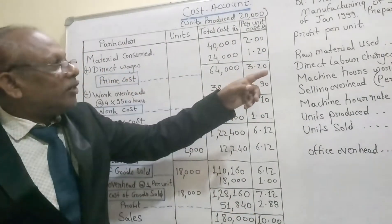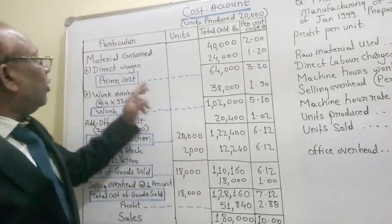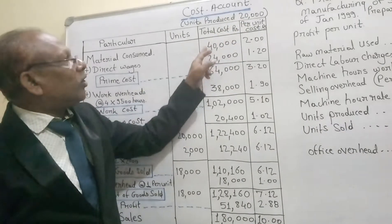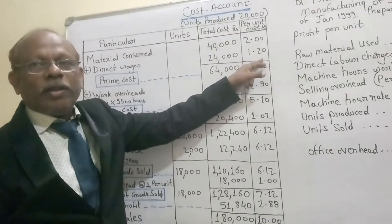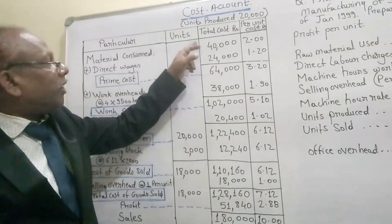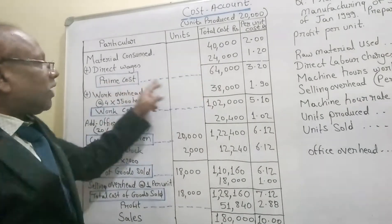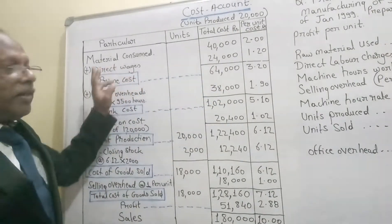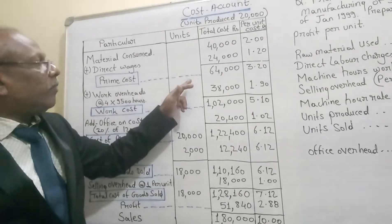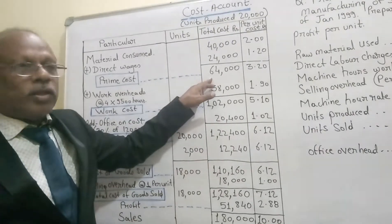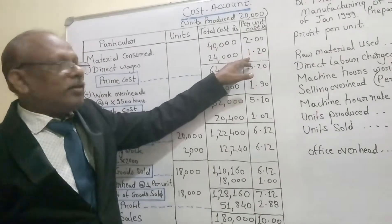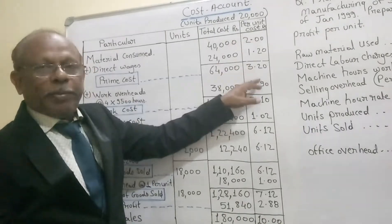Direct labour wages are given as 24,000 rupees. Dividing 24,000 by 20,000 gives 1 rupee 20 paise per unit. Adding raw material consumed and wages together gives prime cost. So prime cost is 64,000 rupees in total, and 3 rupees 20 paise per unit.